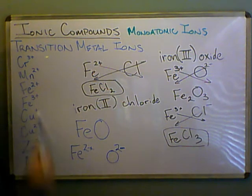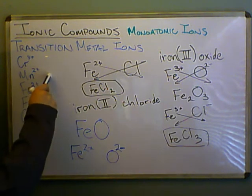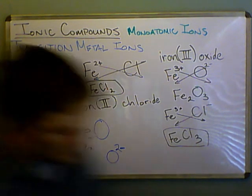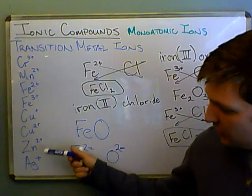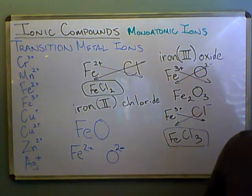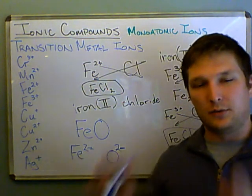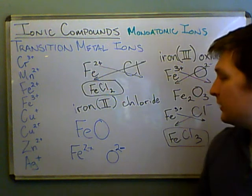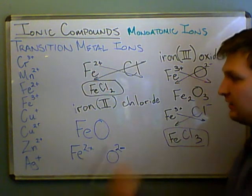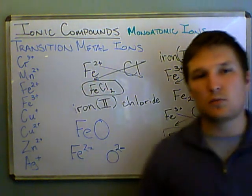That's how we deal with the transition metals. Usually, zinc, silver, and I believe cadmium are the only ones you really don't need to specify — manganese and chromium you do need to specify. Usually whenever you do this, you'll have a chart with all the different names. The only tough part is if you're given a formula like FeO and need to find its name — is that iron(III) oxide or iron(II) oxide? We'll do some examples with that.